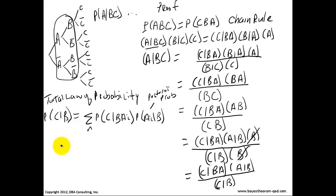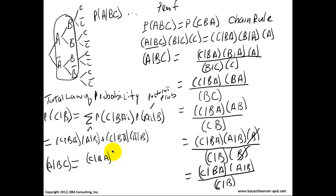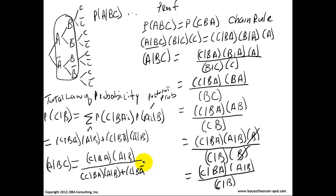From here, we'll expand it out. So this is equal to C given B-A times A given B, plus C given B-A-hat times A-hat given B. And now we arrive at: A given B-C equals C given B-A times A given B, divided by C given B-A times A given B, plus C given B-A-hat times A-hat given B.